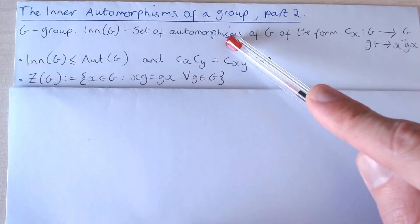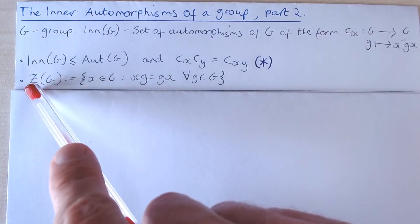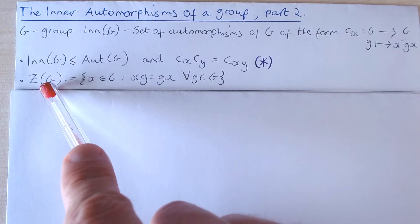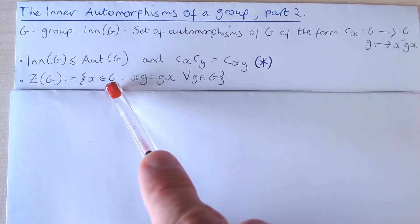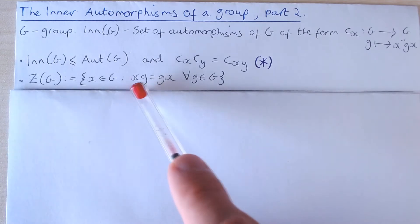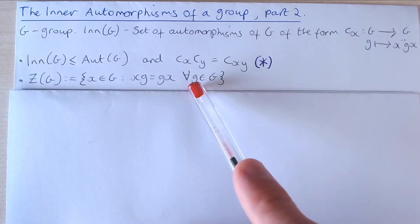The centre of a group G, denoted by capital Z(G), is equal to the set of elements x of G such that x commutes with all of the elements of G.